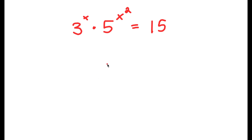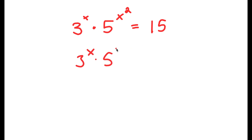In this problem, I have 3 to the power of x times 5 to the power of x squared is equal to 15. To solve this, I'm going to first start by rewriting 15 as 3 times 5. So now I have 3 to the power of x times 5 to the power of x squared is equal to 3 times 5.